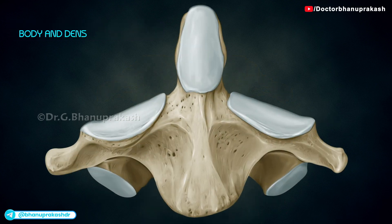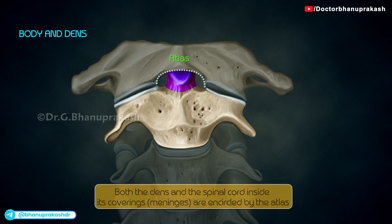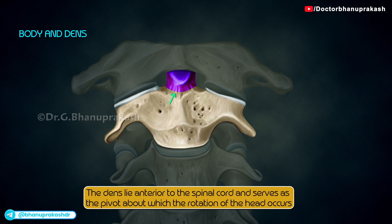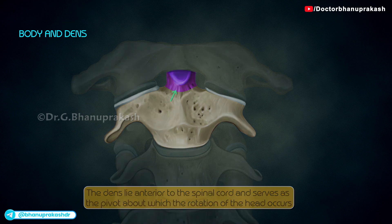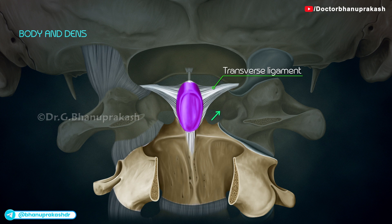The distinguishing feature of C2 is the blunt tooth-like dens which projects superiorly from its body. Both the dens and the spinal cord inside its coverings or meninges are encircled by the atlas. The dens lies anterior to the spinal cord and serves as the pivot about which rotation of the head occurs. The dens is held in position against the posterior aspect of the anterior arch of the atlas by the transverse ligament of the atlas, which extends from one lateral mass of the atlas to the other.